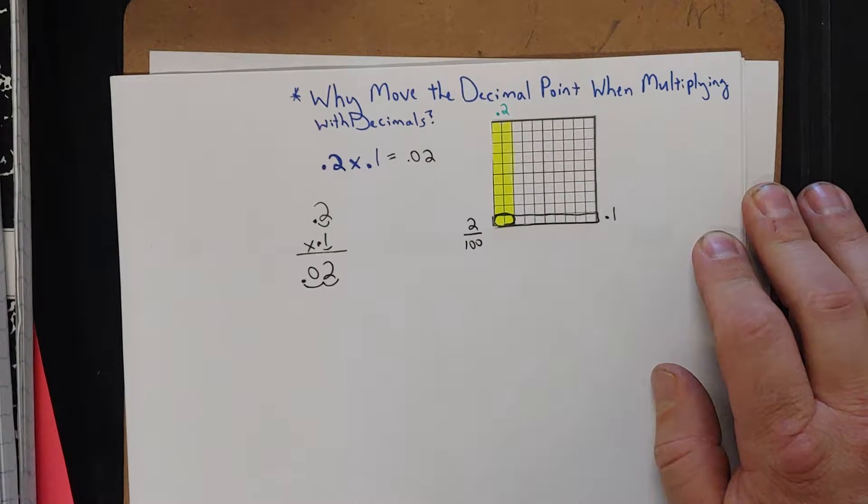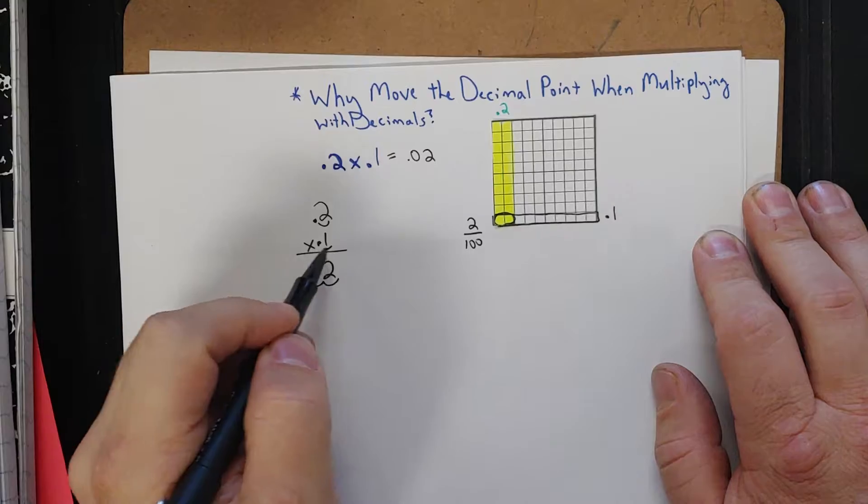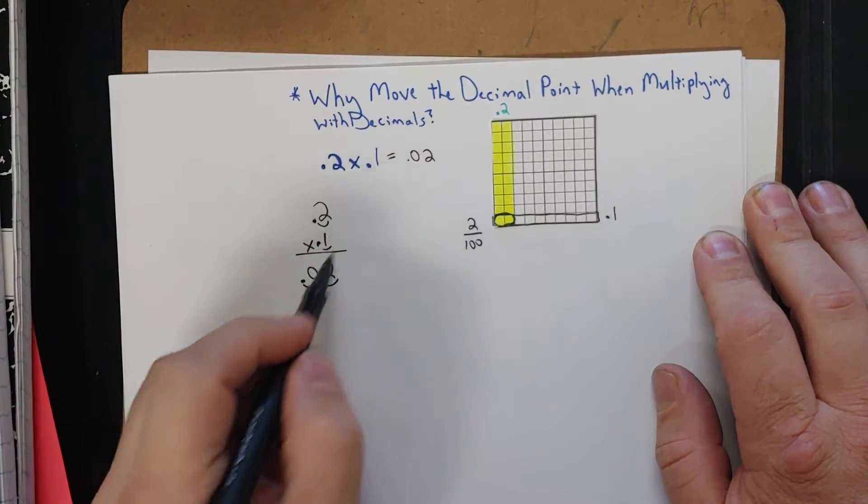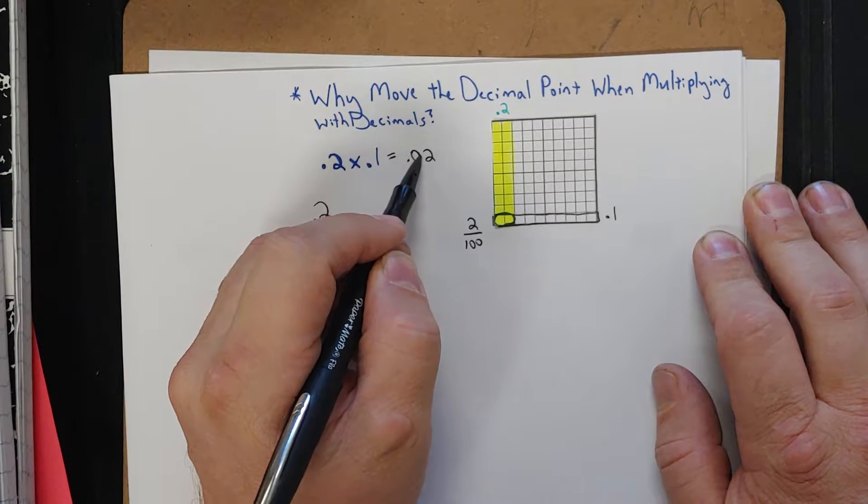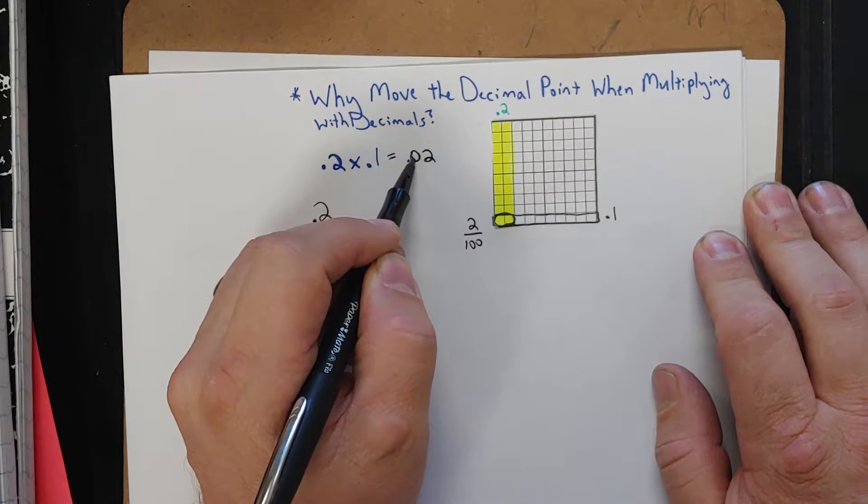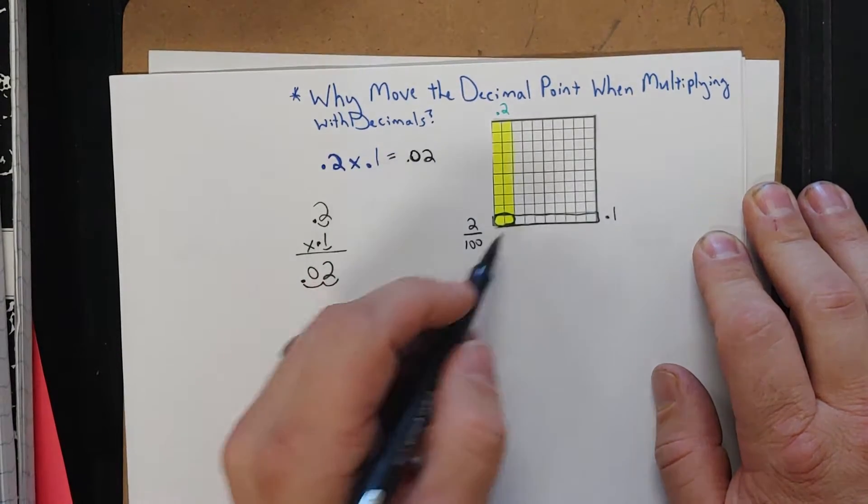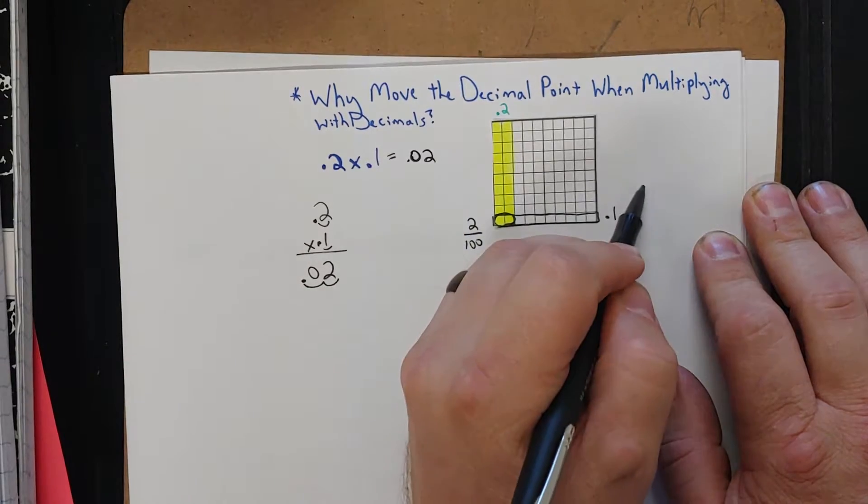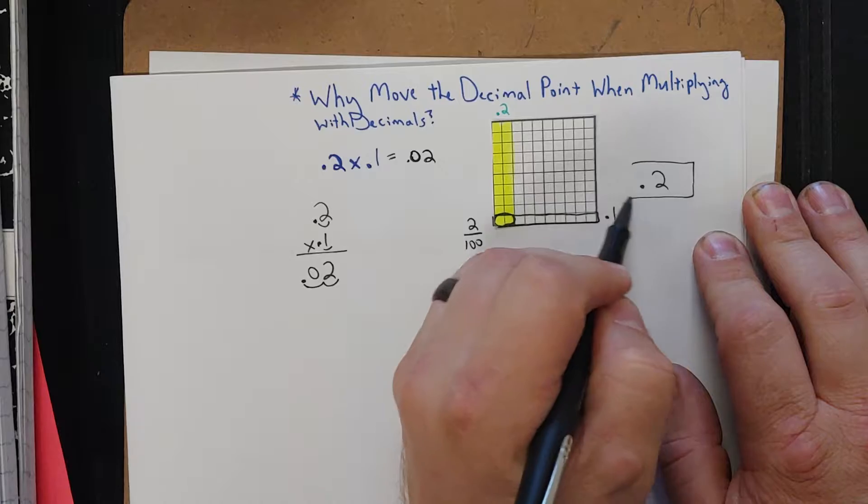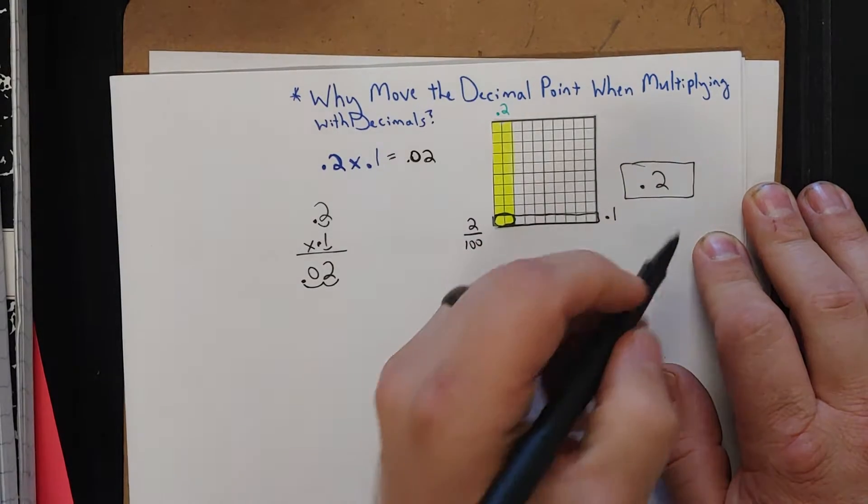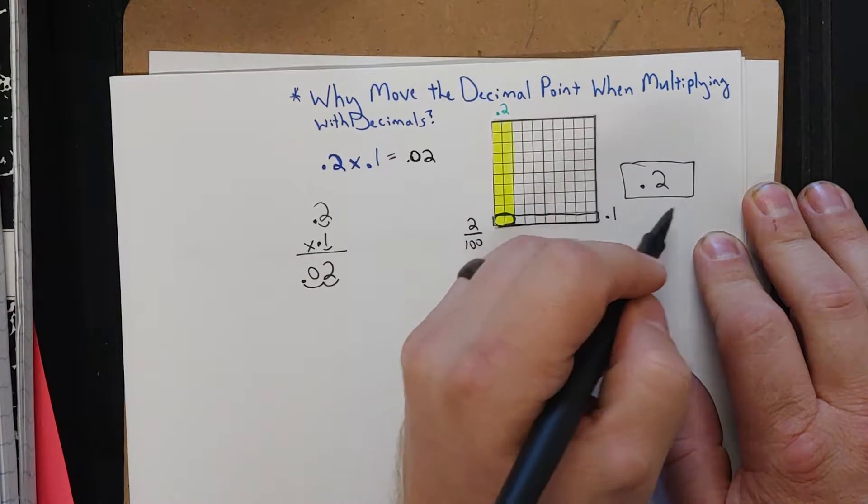So why does that occur that way? When you're looking at the algorithm, of course, they're going to have to match up. But why are we moving that decimal exactly? And how does that become 2 hundredths? That's kind of what we're looking at. So let's say I have 2 tenths. So 2 tenths, let's go back. 2 tenths and I'm taking 1 tenth of 2 tenths, 1 tenth group of 2 tenths.